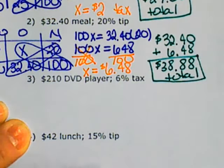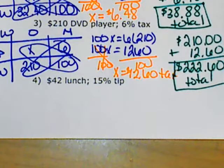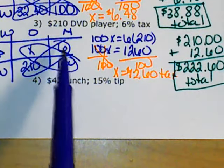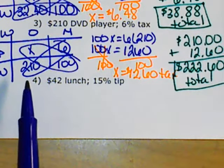Let's see if you can do number three by yourself. Did you get $222.60 total for the DVD player? If so, great job. Make sure that you are putting the percent over 100 and the original amount at the bottom left.